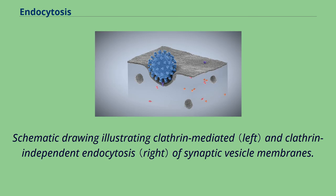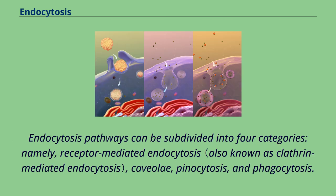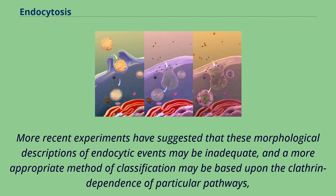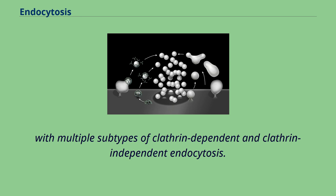Schematic drawing illustrating clathrin-mediated and clathrin-independent endocytosis of synaptic vesicle membranes. Endocytosis pathways can be subdivided into four categories: receptor-mediated endocytosis, caveolae, pinocytosis, and phagocytosis. More recent experiments have suggested that these morphological descriptions of endocytic events may be inadequate, and a more appropriate method of classification may be based upon the clathrin-dependence of particular pathways, with multiple subtypes of clathrin-dependent and clathrin-independent endocytosis.